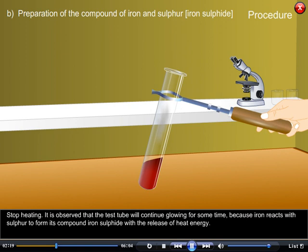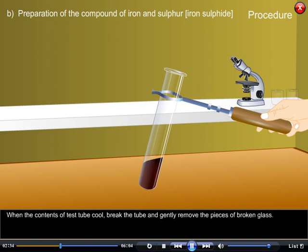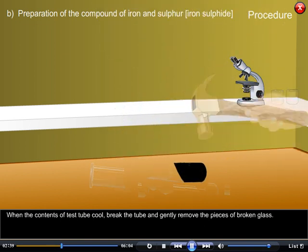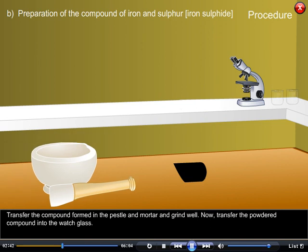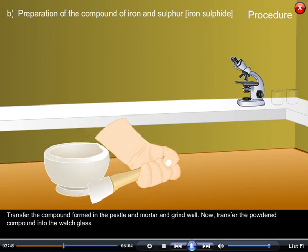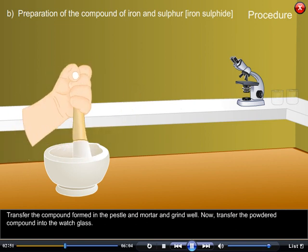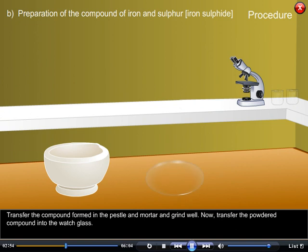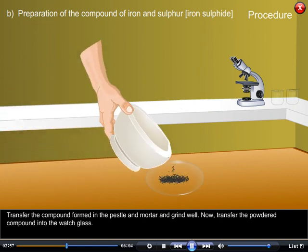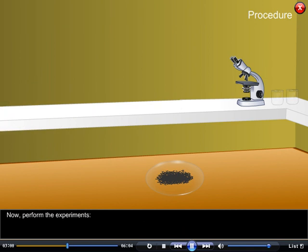Stop heating. It is observed that the test tube will continue glowing for some time because iron reacts with sulphur to form its compound iron sulphide with the release of heat energy. When the contents of the test tube cool, break the tube and gently remove the pieces of broken glass. Transfer the compound formed in the pestle and mortar and grind well. Now transfer the powdered compound into the watch glass. Now perform the experiments.